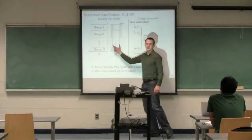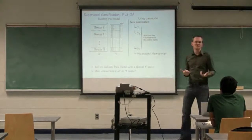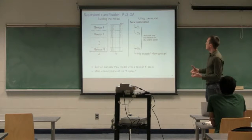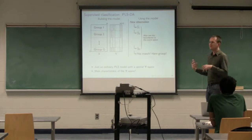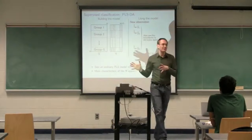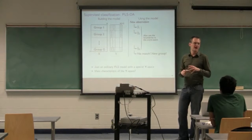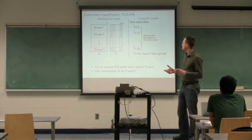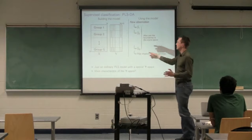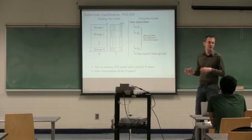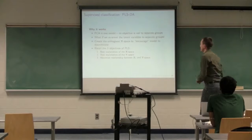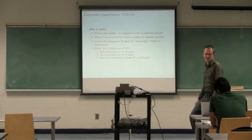The PLS model from this very special Y space — one way to see it is you're taking the unsupervised PCA model and now twisting the latent variables so they also model the Y space and maximize the covariance. Because this Y space has such independent directions, you're really adjusting those latent variables to have maximum discrimination. You're encouraging the latent variables to go in directions that explain X and also separate those groups out.